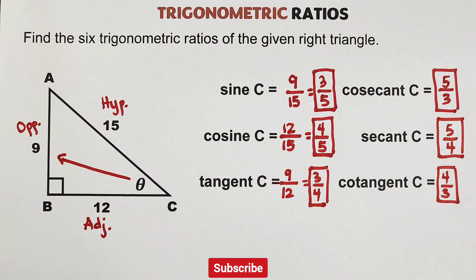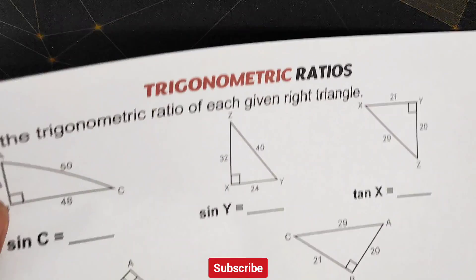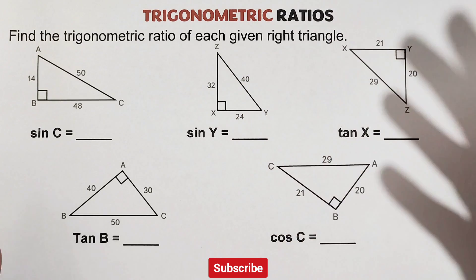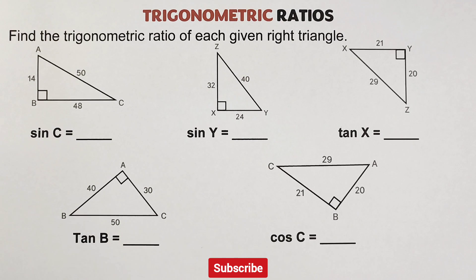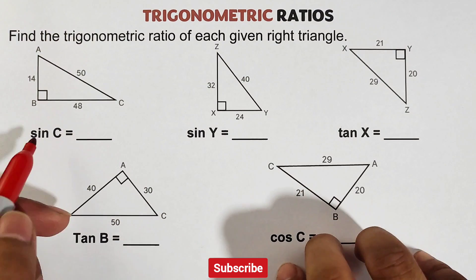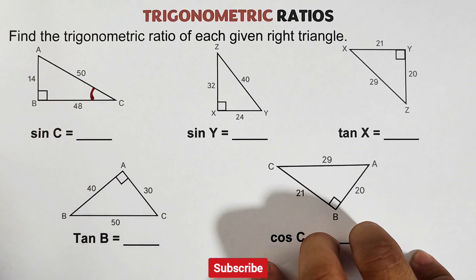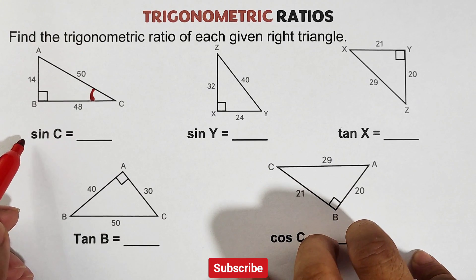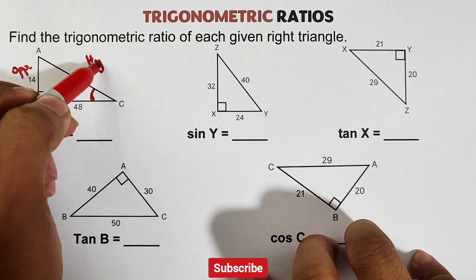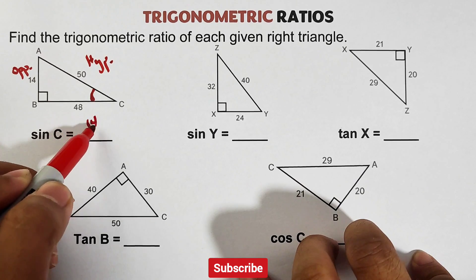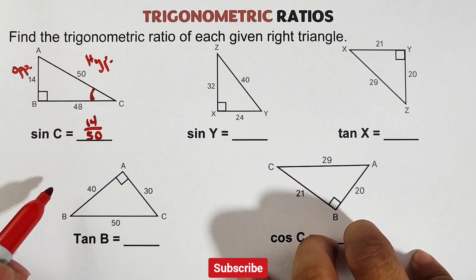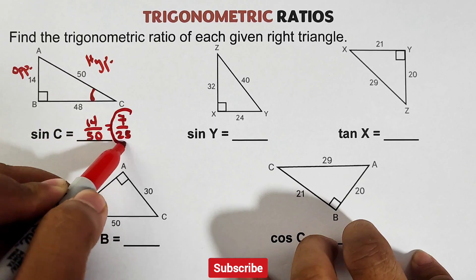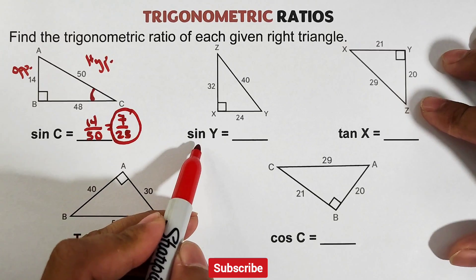Now I hope you learned from that part. Let's continue with another activity. For this part, you are asked to find the trigonometric ratio of each given right triangle — but not all six; each triangle has just one ratio to find. For sine C, the reference is angle C. Since sine is opposite over hypotenuse, that is 14 over 50. Simplify: that would be 7 over 25. This is the answer for sine C.